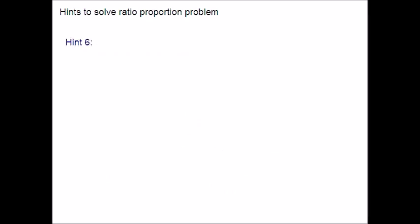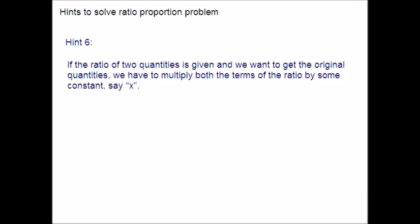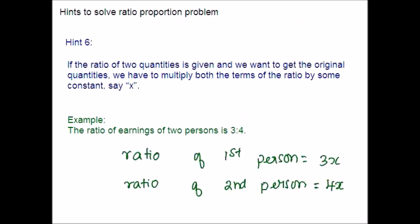Hint 6: If the ratio of two quantities is given and we want to get the original quantities, we have to multiply both terms of the ratio by some constant, say X. You will get many word problems like this. You have to introduce a variable X to find the unknown. Unless you name the unknown as a variable, it will be difficult to solve. For example, if the ratio of earnings of two persons is given without exact numbers, assume the first person's share as 3X and the second as 4X.